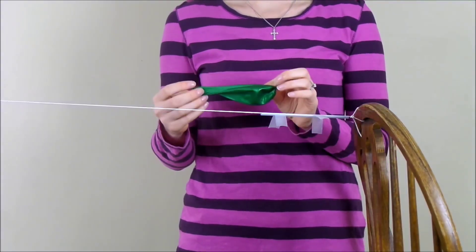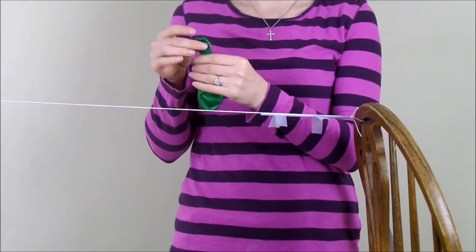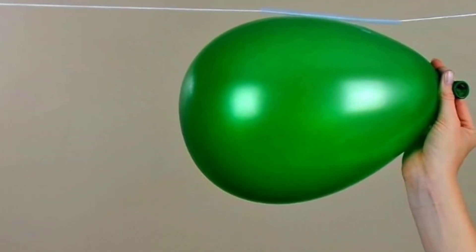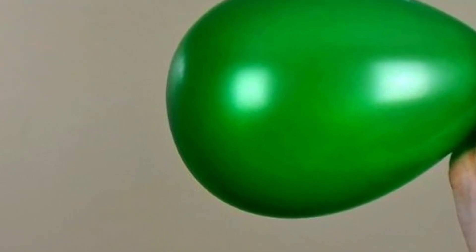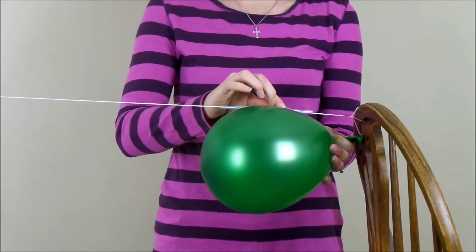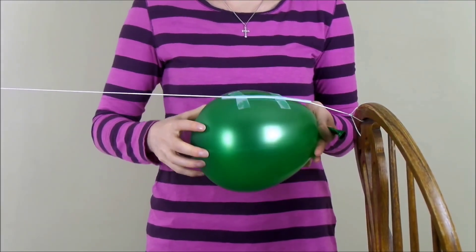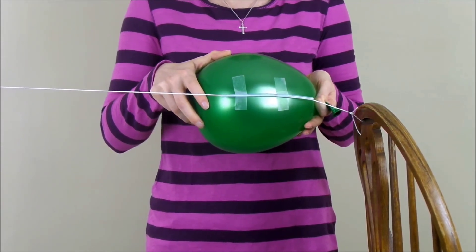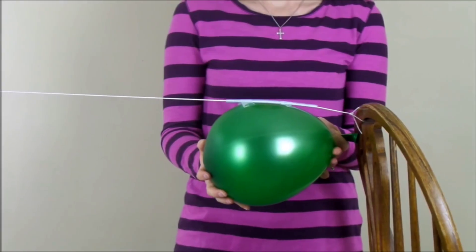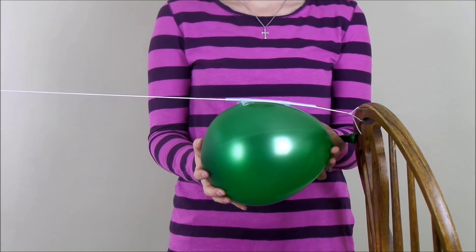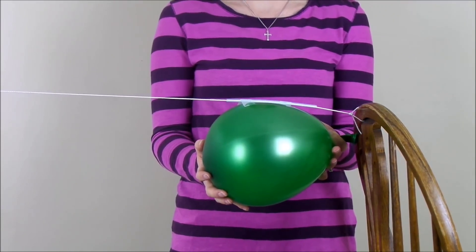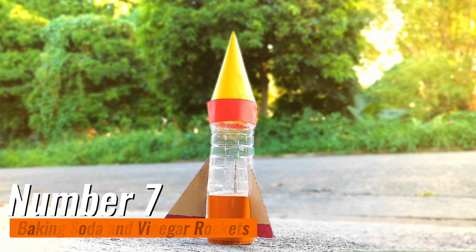As the air rushes out of the balloon, it propels the straw forward, and the balloon rocket zooms along the string. Kids will be amazed by the speed and motion of their homemade rocket, and will have a blast experimenting with different balloon sizes and air pressures to see how they affect the rocket's performance. It's a simple yet exhilarating experiment that combines fun with learning about the principles of physics and motion.